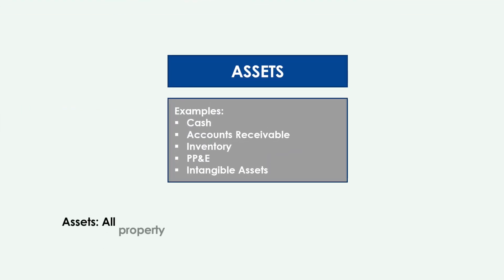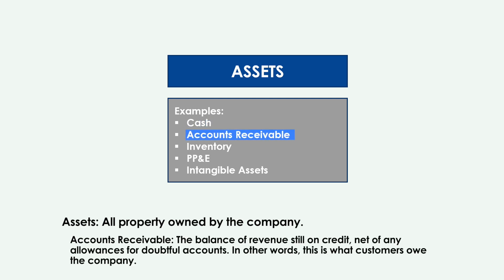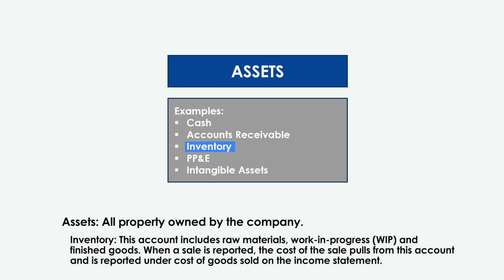Now we need to build on some helpful vocabulary before we can expand on this equation. Let's quickly walk through a few examples for each of the three categories: assets, liabilities, and stockholders' equity. Starting with assets, which represents all property owned by the company. First, we have cash, the most liquid account — this includes all cash and cash equivalents. Next, accounts receivable: the balance of revenue still on credit, net of all allowances for doubtful accounts — in other words, what customers owe the company. After that, inventory. This account includes raw materials, work in progress, and finished goods.